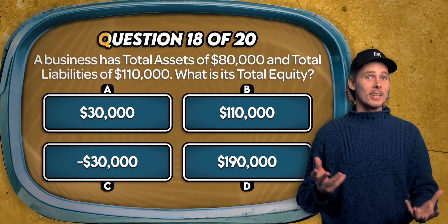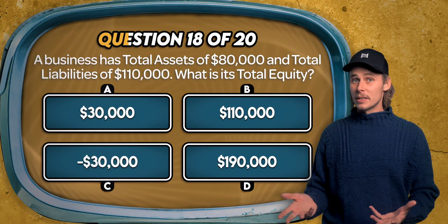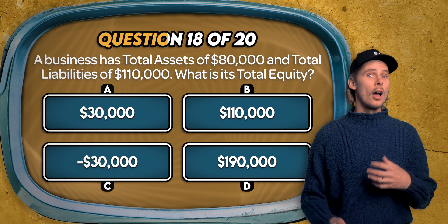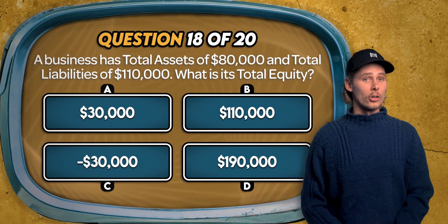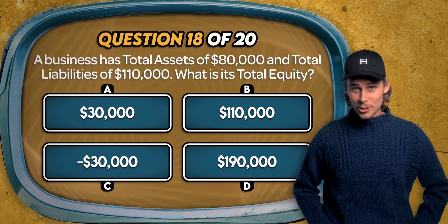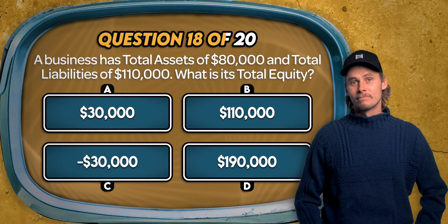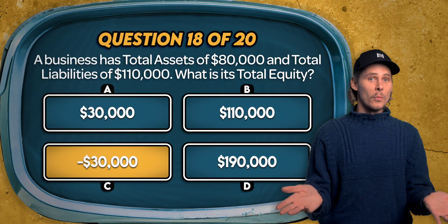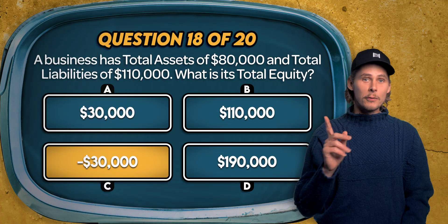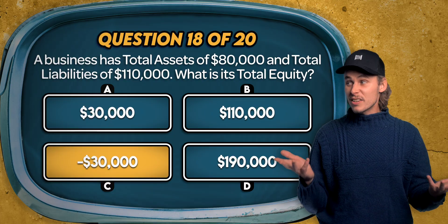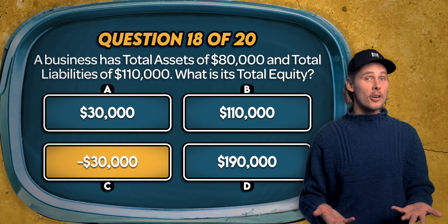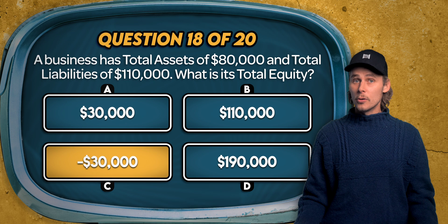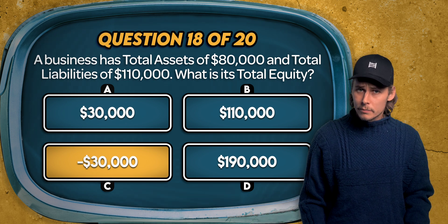Question 18. A business has total assets of $80,000 and total liabilities of $110,000. What is its total equity? Is it $30,000, $110,000, minus $30,000, or $190,000? The answer is C. Equity equals net assets. Taking $80,000 in assets minus $110,000 in liabilities gives negative $30,000 in equity. This means the business owes more to external parties than it owns, which is a financially risky position.